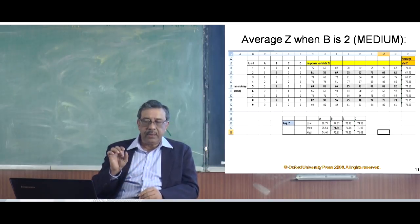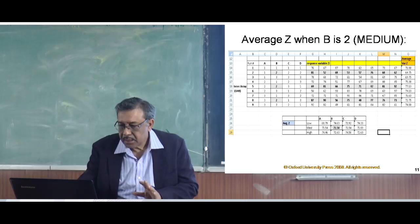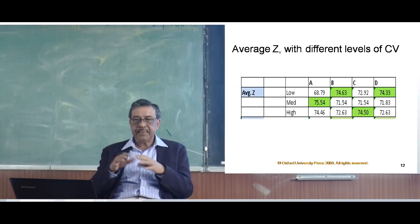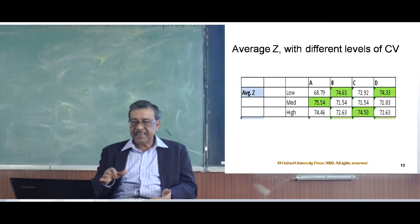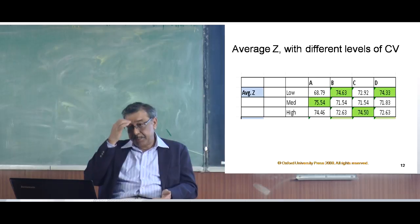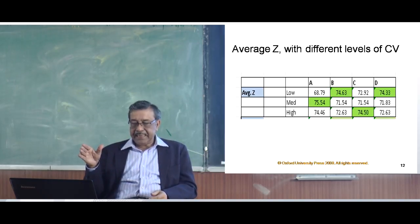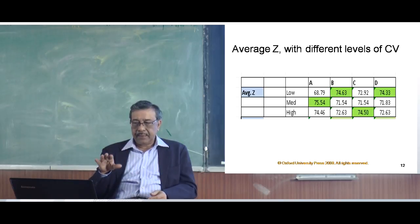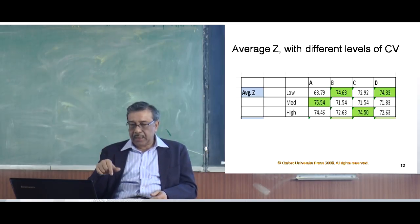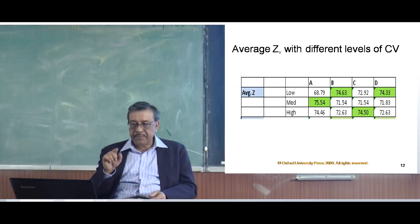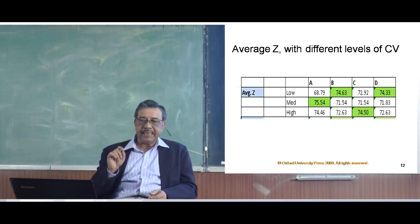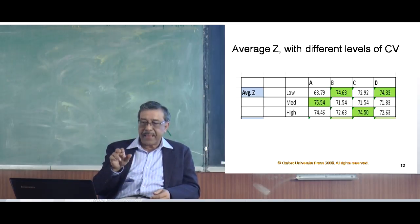Likewise, all 12 cells have to be entered with the respective average z. Once the lower table is fully done with all 12 numbers entered, it looks like this. There are 4 variables a, b, c and d, each with low, medium and high levels. In the a column, the maximum value of z comes when a is medium — 75.54 is the maximum in that column.